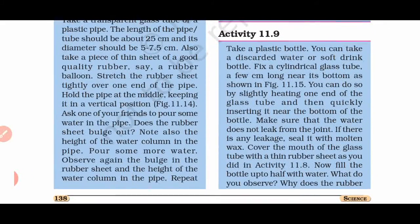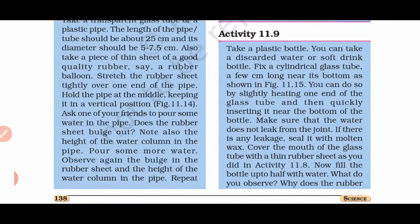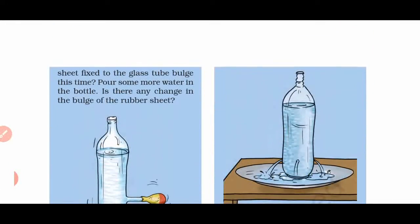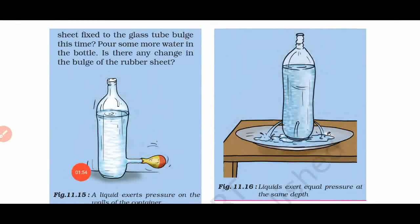Now let's talk about the second activity. In this second activity, what do we need to do? We need to take a plastic bottle. We need to make a hole here, and you have to insert a small pipe here. And with this pipe, we have to attach the balloon as you can see here.